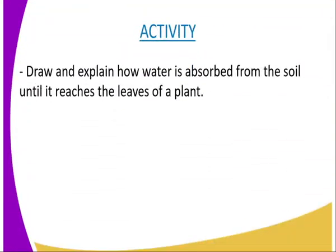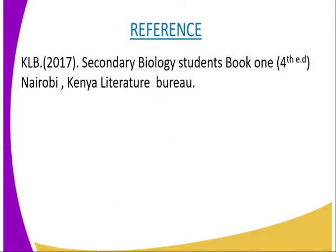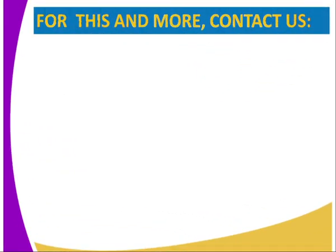Having done and said that, you can have the following activity whereby you are required to draw and explain how water is absorbed from the soil until it reaches the leaves of a plant. You are required to explain the process that we have explained in our lesson. For more reference on this lesson, you can refer to our KLB Secondary Biology Students Book 1, fourth edition, Kenya Literature Bureau.